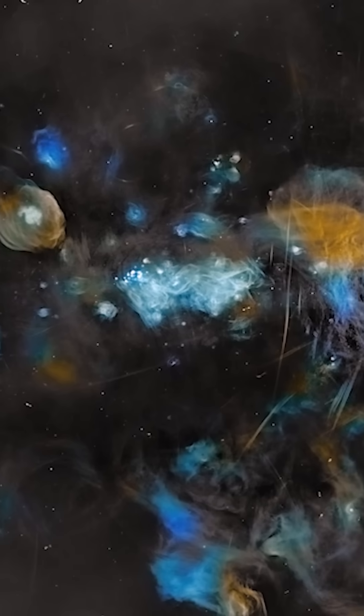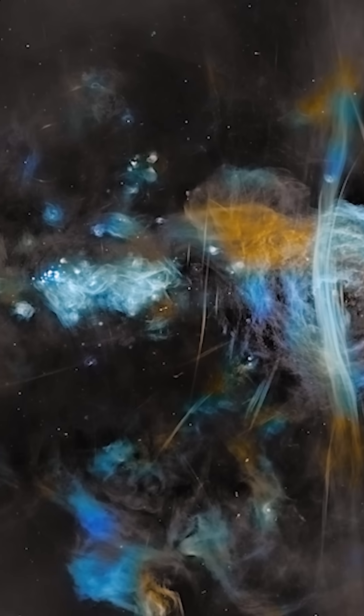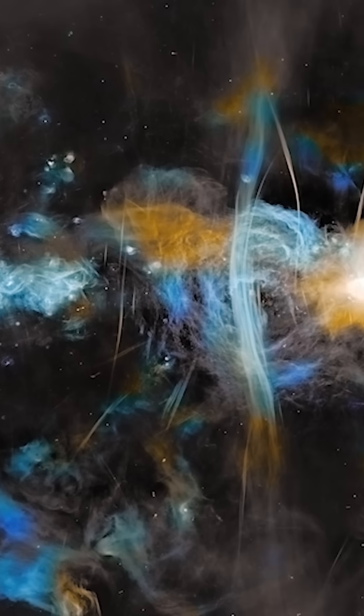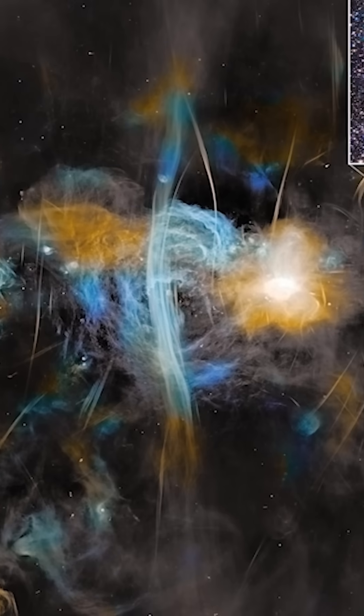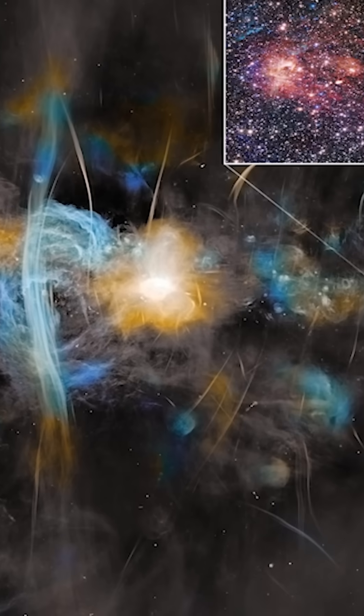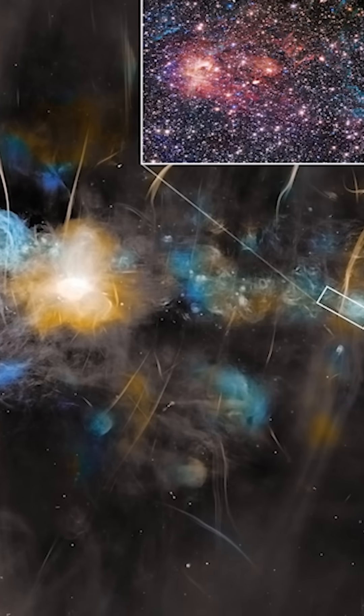What does star formation look like in extreme environments? Webb took a peek at Sagittarius C, a star-forming region located in the heart of our galaxy near the supermassive black hole at its core.